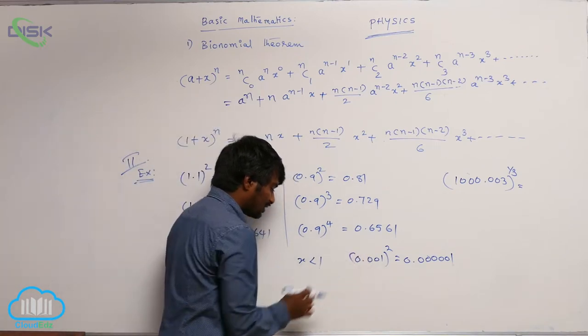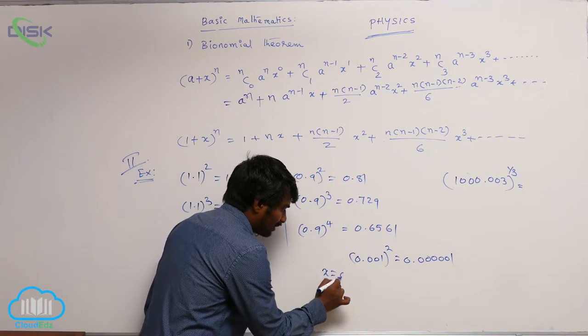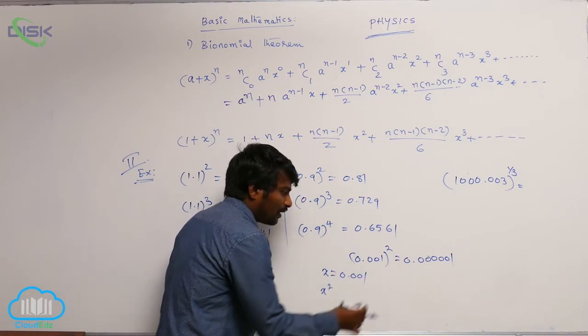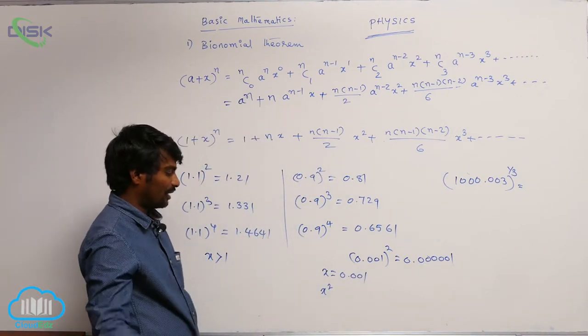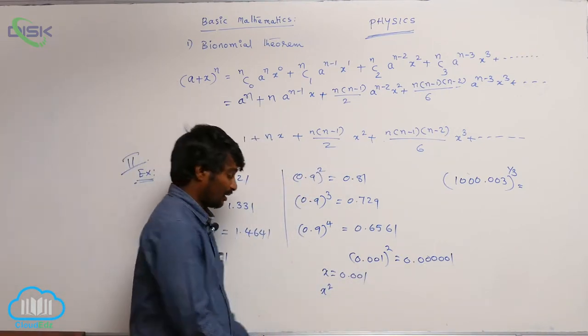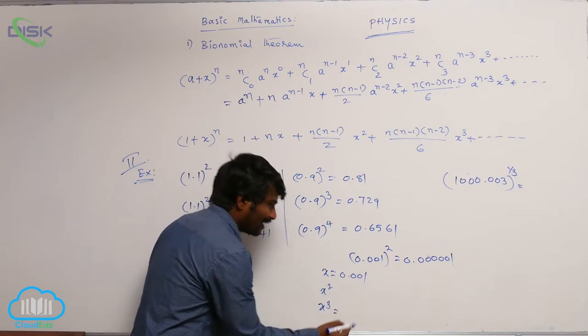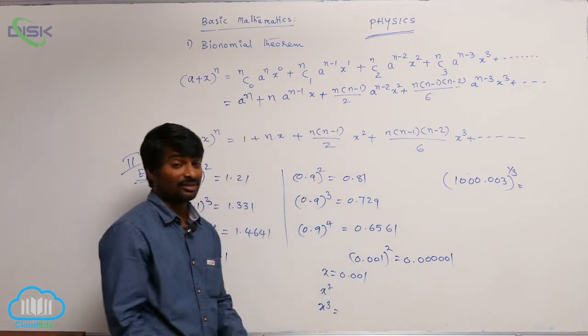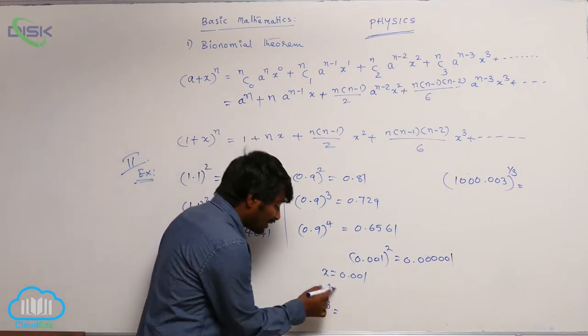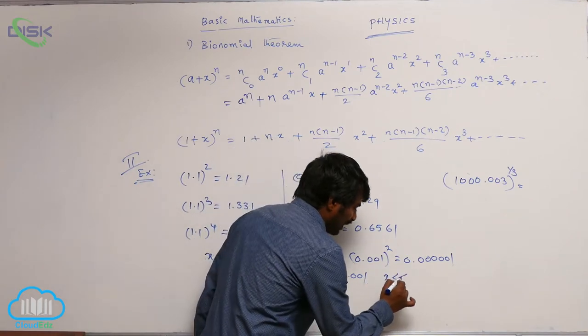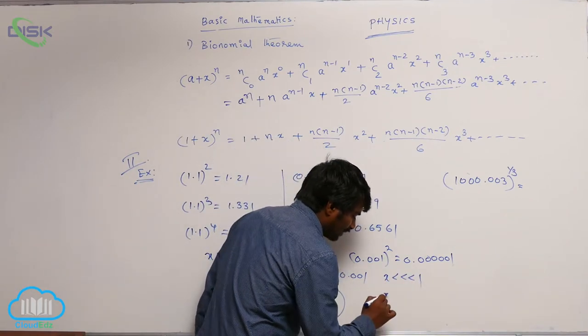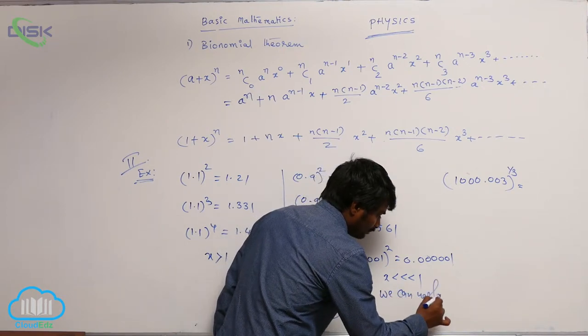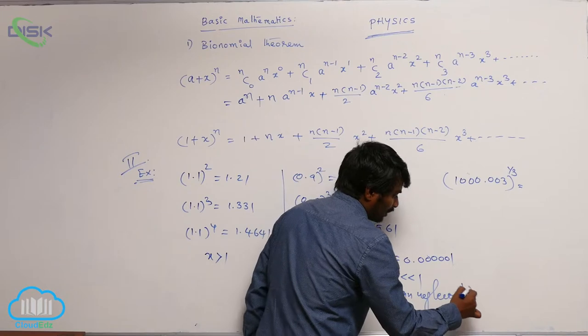That means, if I take x as 0.001, x square value is again very less and you can neglect it. And x cube value again, after 8 zeros, you will be getting 1. That means, again less. So, you can neglect the higher order terms. When x is very much less than 1, we can neglect higher order terms.